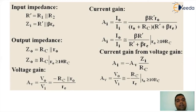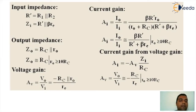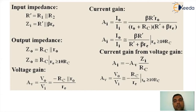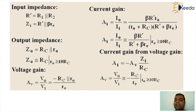The output impedance ZO can be written as RC parallel small RO; if RO is very large it can be neglected and ZO approximately equals RC. The voltage gain AV equals VO by VI, which equals minus of (RC parallel small RO) divided by small RE. If RO is very high, AV simplifies to minus RC divided by small RE. The current gain is I0 by II, resolved through a current chain rule giving: AI = beta times R' times small RO, divided by (RO plus RC) times (R' plus beta·RE).